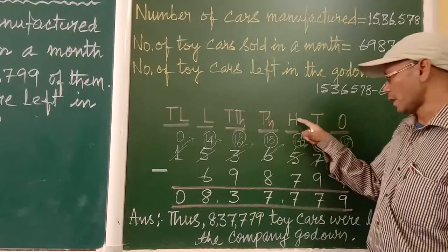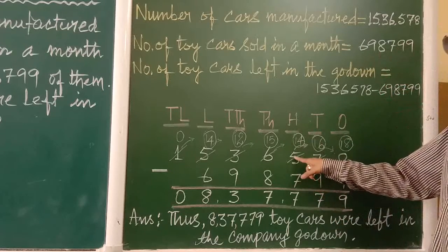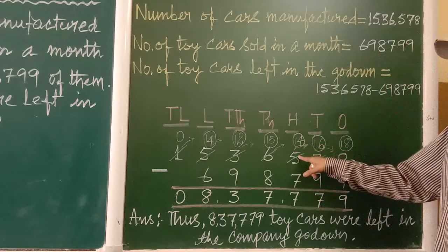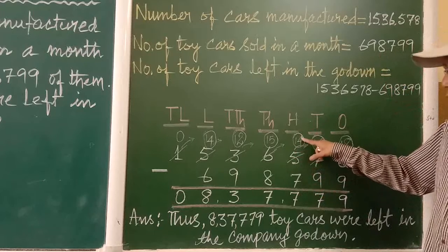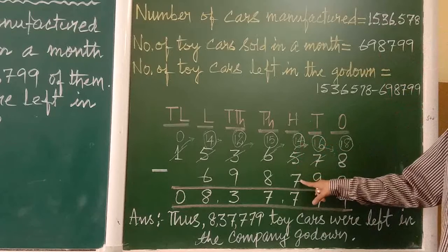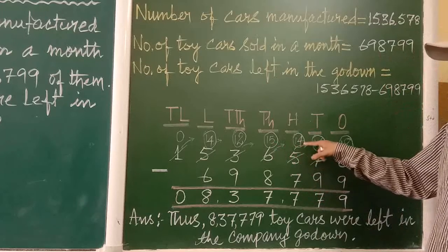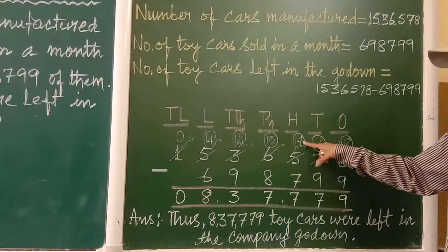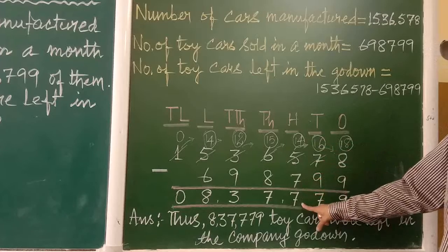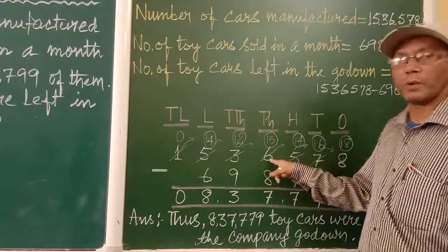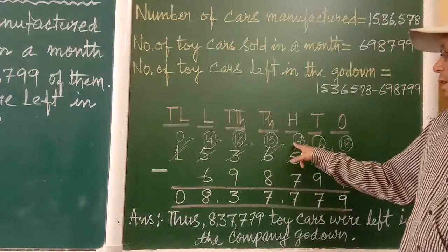Now come to the hundreds place. It is 5, but we have given one here, so it is 4 now. So from 4 we won't be able to subtract 7, so we have to carry from 6. So this will become 14. 14 minus 7 is 7.